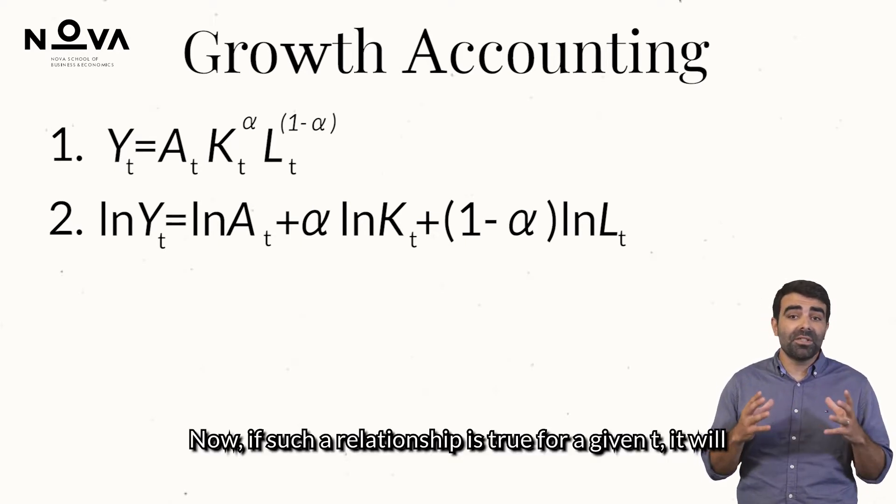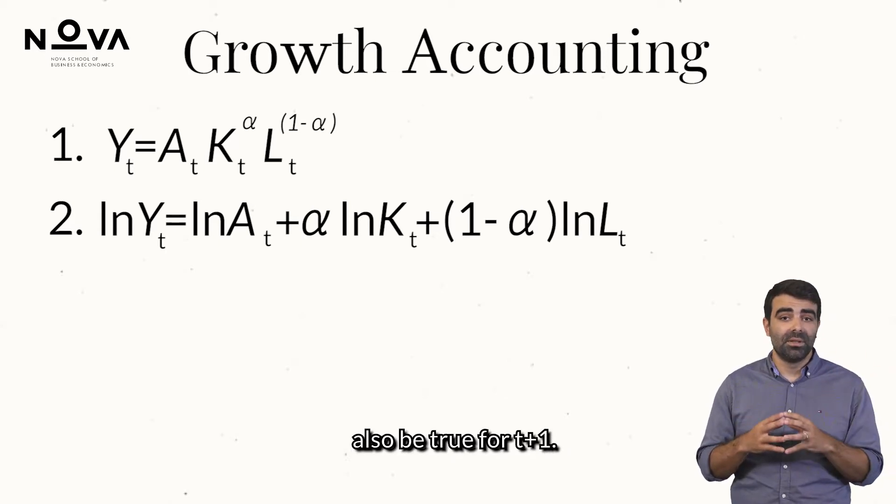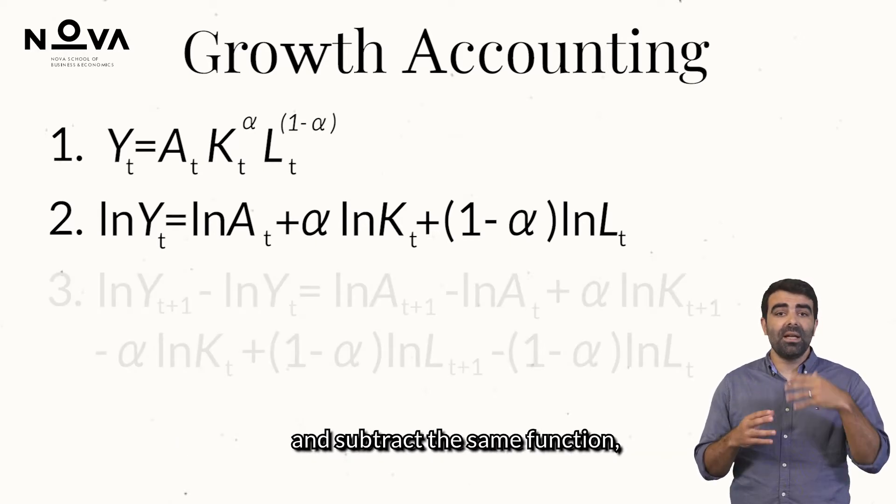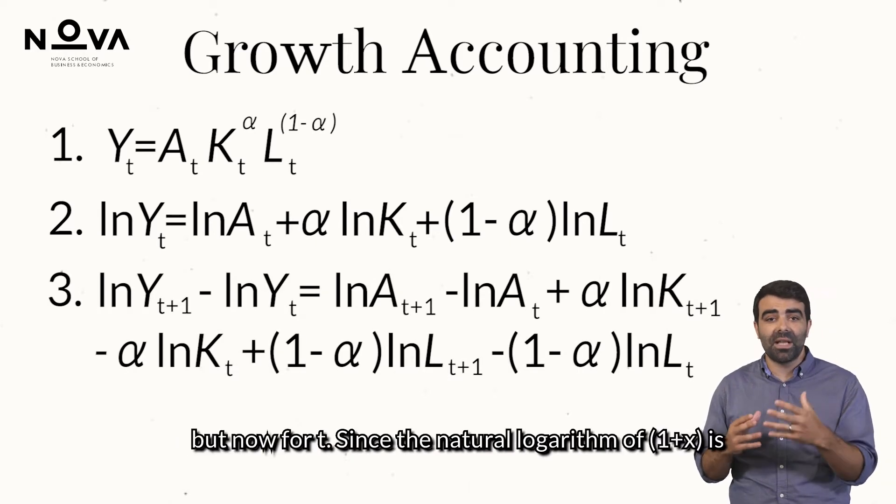Now, if such a relationship is true for a given t, it might also be true for t plus 1. So write down the production function in logs for t plus 1, and subtract the same function but now for t.